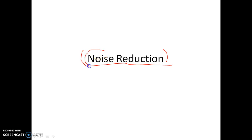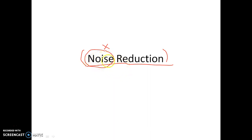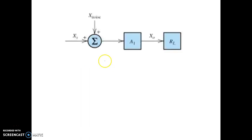Noise means any unwanted signal in the output — that is called noise. Noise is not desirable for any output and must be reduced as much as possible, so we have to design the circuit properly. By application of negative feedback, we can easily reduce the amount of noise in the output. So let us discuss about that.